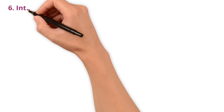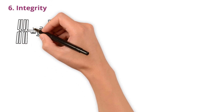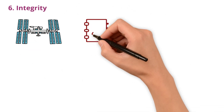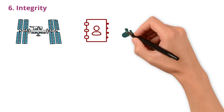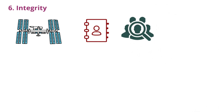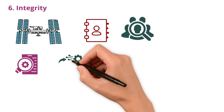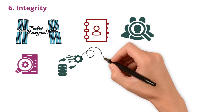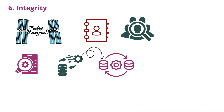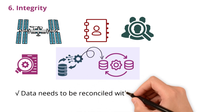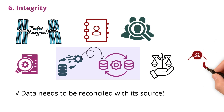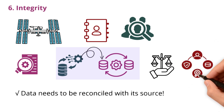Integrity keeps data accurate and linked as it moves through different systems. Imagine a customer's address staying connected to their profile no matter where it's stored. The data integration process involves processing data through multiple layers, right from the landing layer to the final presentation layer. Throughout data processing, data needs to be reconciled with its source. Maintaining data integrity ensures that all related data stays properly linked and trustworthy.